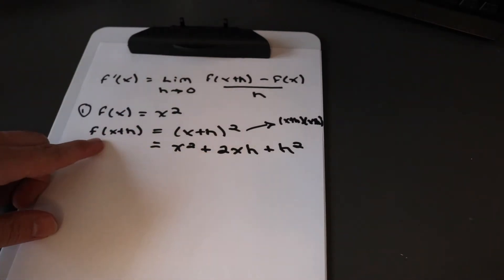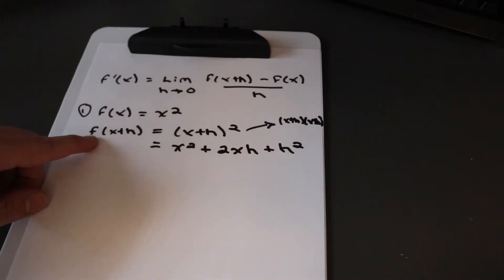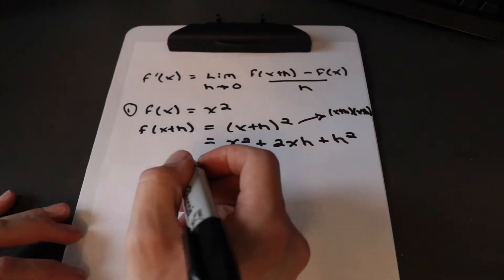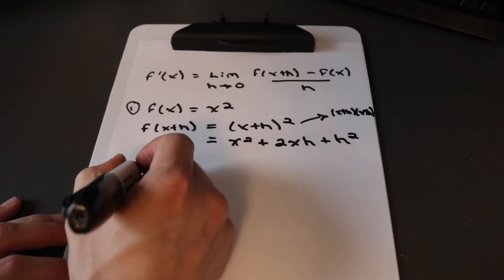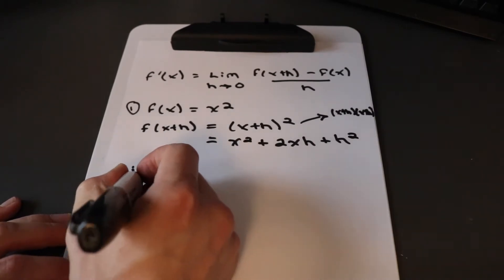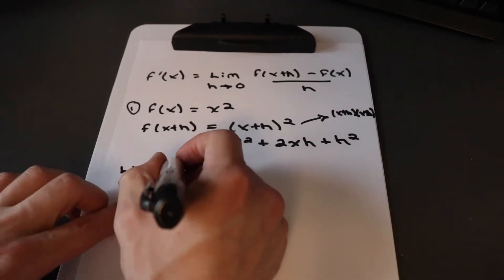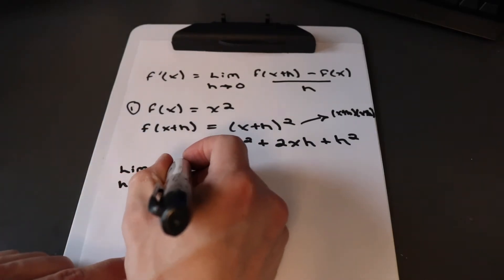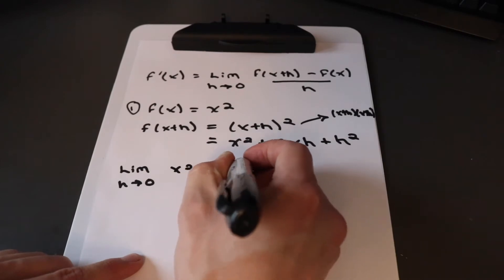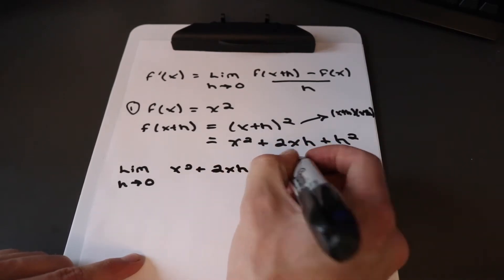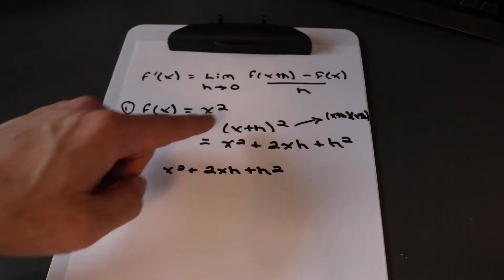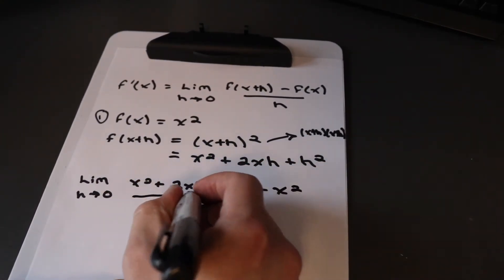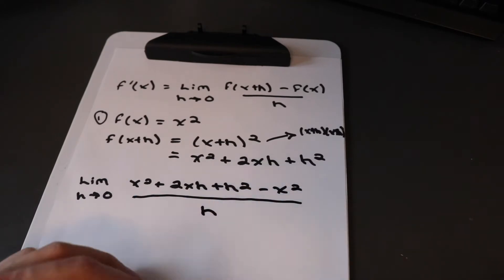Now we take these two values — f of x and f of x plus h — and substitute them into the definition, then apply the limit. So we write: limit as h approaches zero of x squared plus 2xh plus h squared, minus f of x which is x squared, all over h, based on our derivative rule.